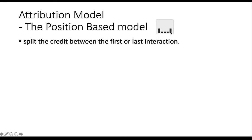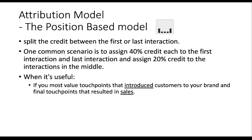The position-based model splits the credit between the first and last interaction. The common scenario assigns 40% credit each to the first and last interactions, and distributes the remaining 20% evenly among the middle interactions. For example, with five total interactions, the first receives 40%, the last receives 40%, and each of the three middle interactions receives 20%/3. This model is useful if you most value the touchpoints that both introduce customers to your brand and result in the final sale.